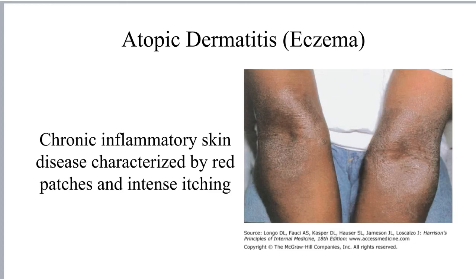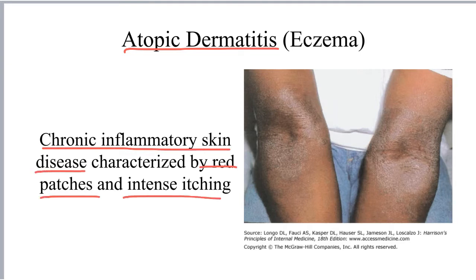The next dermatologic condition we will discuss is atopic dermatitis, which is also sometimes more commonly referred to as eczema, even though technically atopic dermatitis is only one form of eczema. Atopic dermatitis, or just dermatitis for short, is a chronic inflammatory skin disease characterized by red patches and intense itching. Dermatitis is the most common form of eczema that is observed.